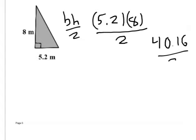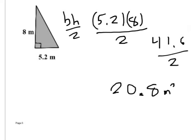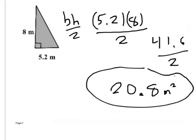41.6 divided by two gives you 20.8. Now this is meters squared because it's an area. You're taking meters times meters, so meters squared. All right, any questions? All right, let's do this triangle.